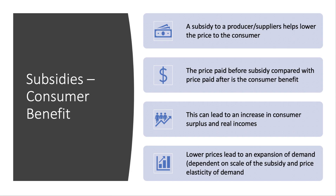So, consumer benefit — what do we focus on here? A subsidy to a producer or to supply helps to lower the price to the consumer. Therefore you look at the price paid before the subsidy compared with the price paid after, and that is the consumer benefit. Key concepts are first of all consumer surplus — can the consumer gain welfare — and secondly, what happens to their real incomes. Well, if you subsidize the producer, normally the price goes down, which leads to an expansion of demand. But of course that depends on the scale of the subsidy, how generous it is, and also the price elasticity of demand.